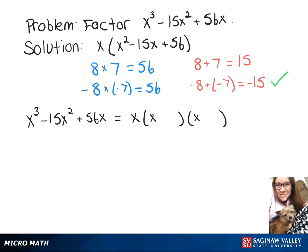We're going to use the two numbers that we just found. So our final answer will be x times x minus 8 times x minus 7.